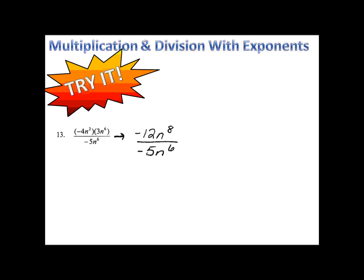We have our n's, 8 minus 6, which is 2, so we have 12n squared over 5.